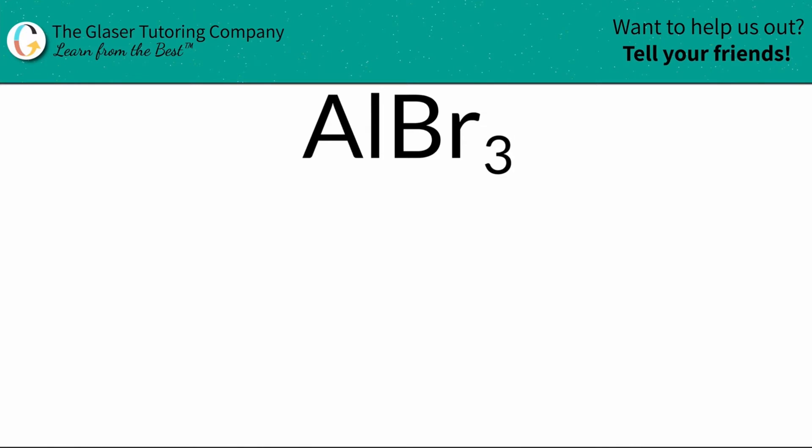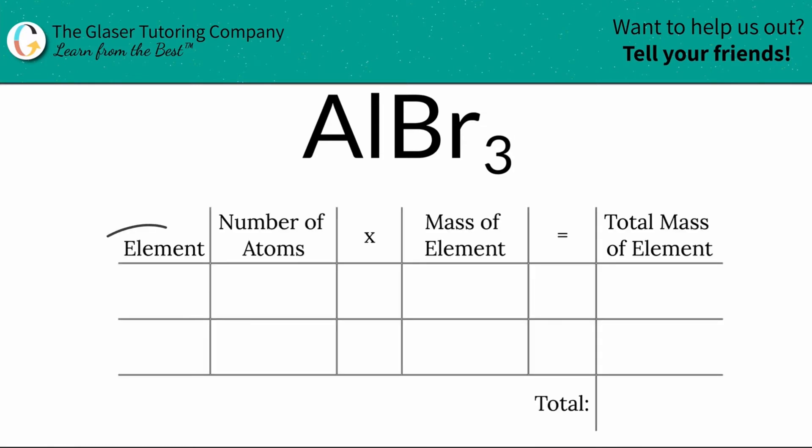So to help me out, I'm going to use my table. So the first column I have to fill out is the element. So I have two elements here, aluminum and bromine, so I'm simply going to write them in their place.